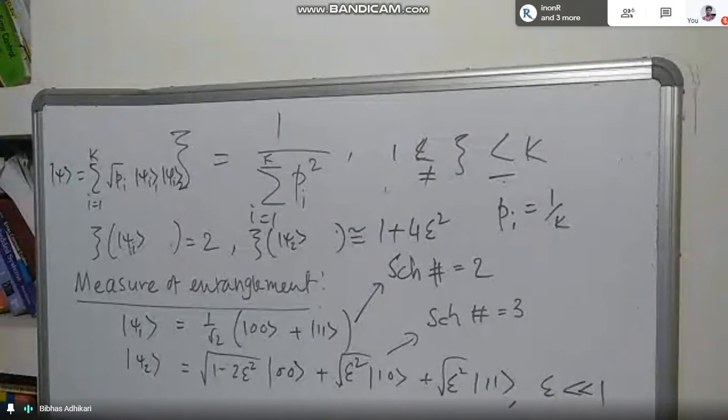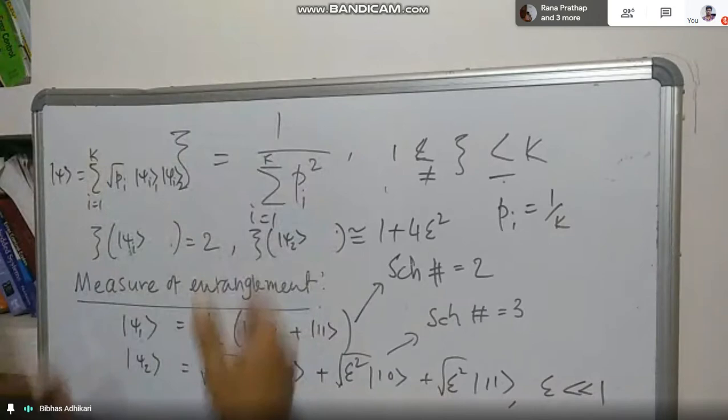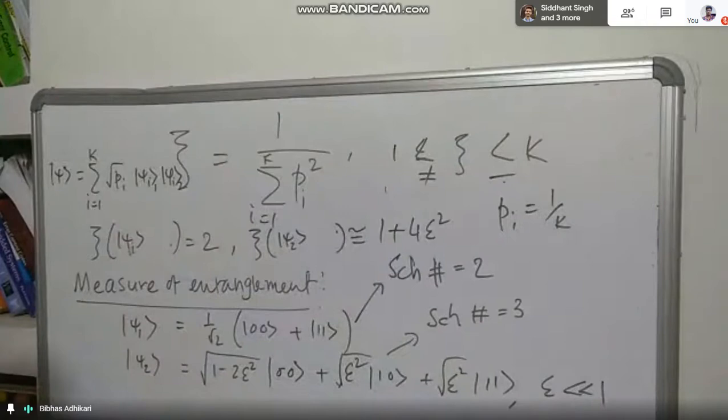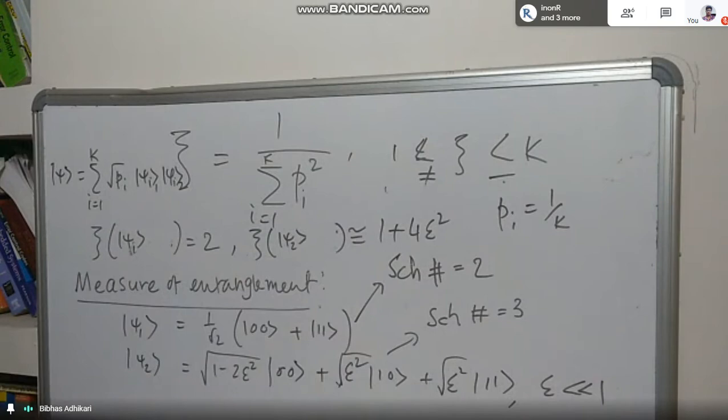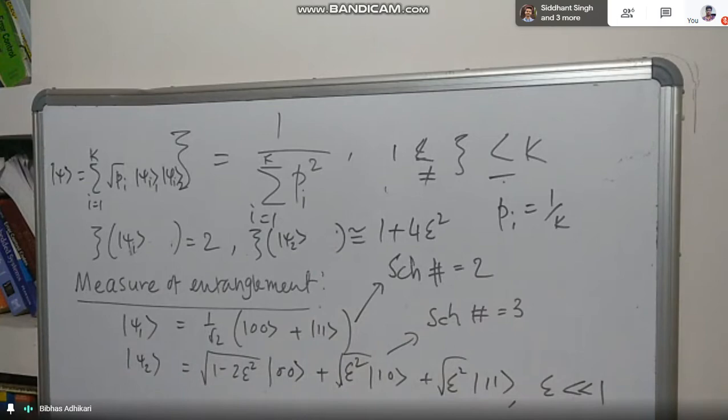Then the question is: why do I define it this way? I can define it differently. For example, given p1, p2, ..., pk — since they form a probability mass function summing to one — I can define the Shannon entropy. The maximum is attained when it equals 1/k, i.e., a uniform distribution.